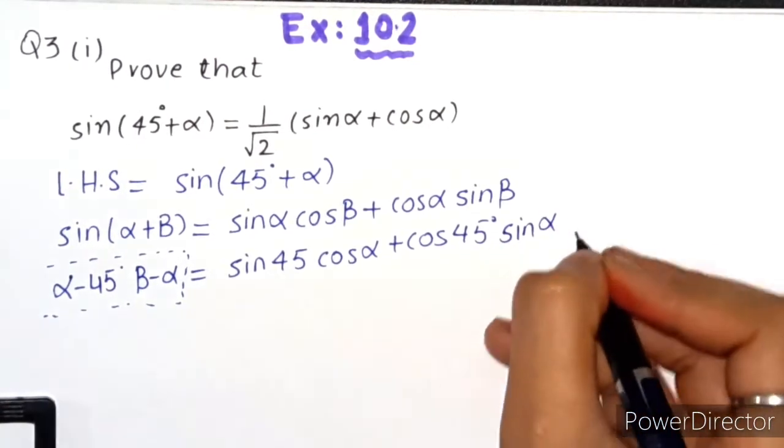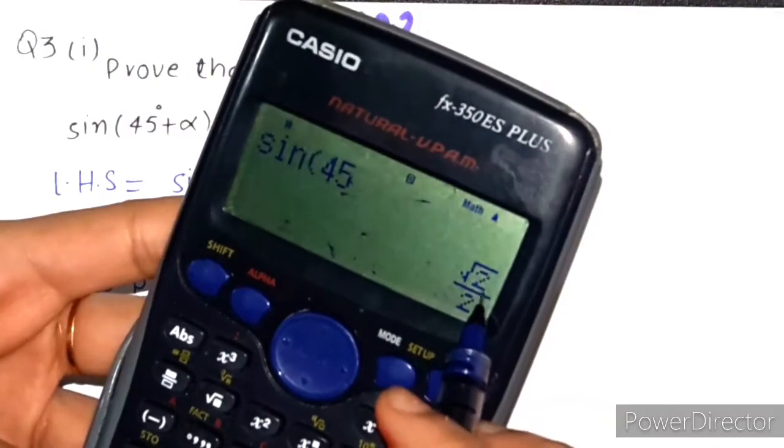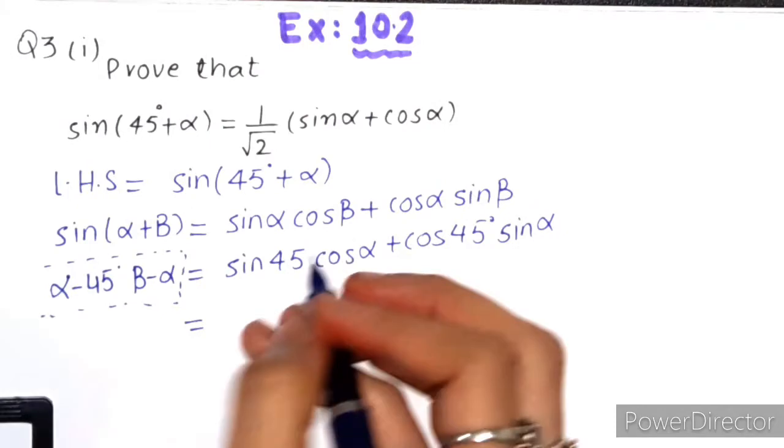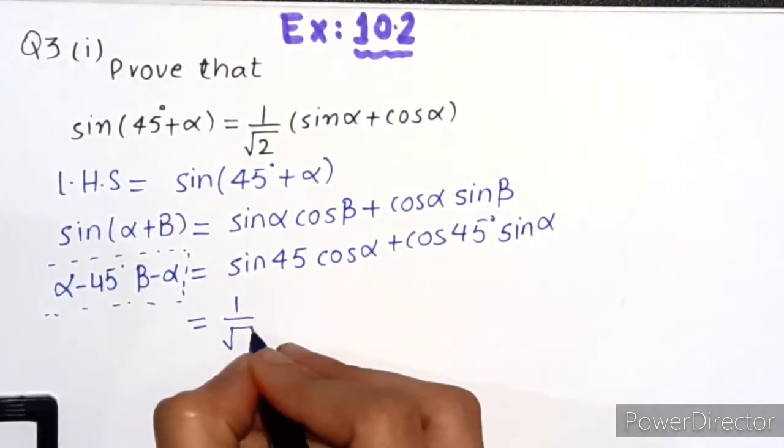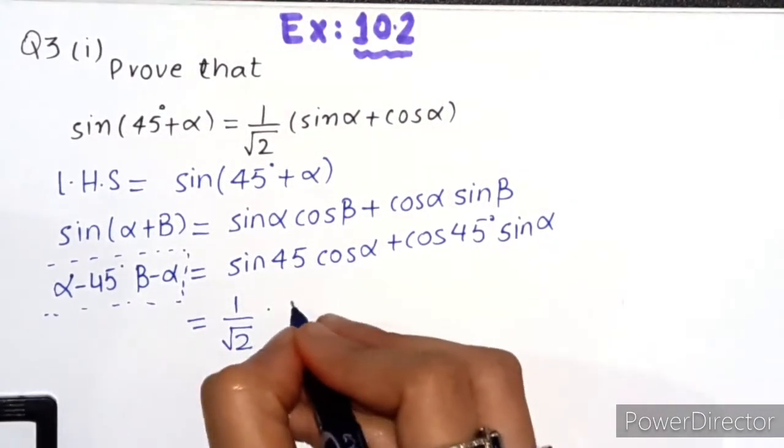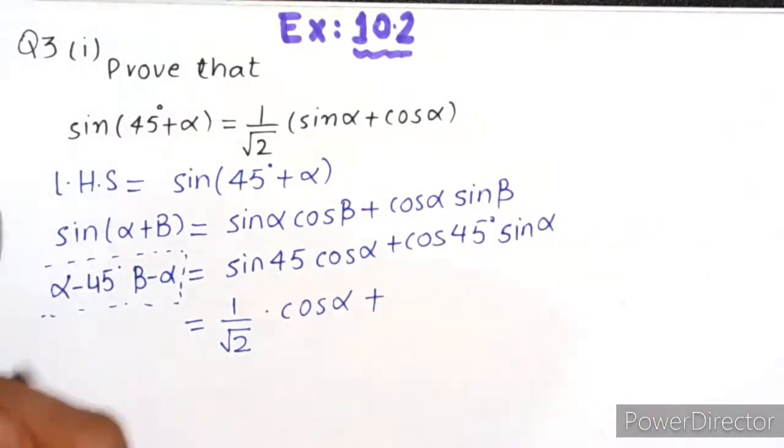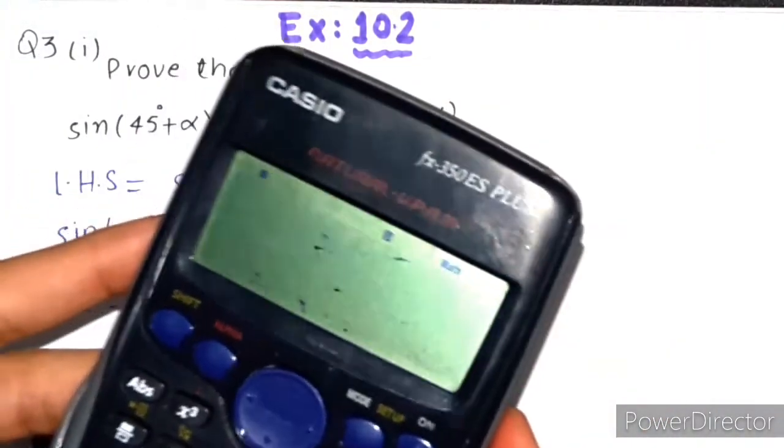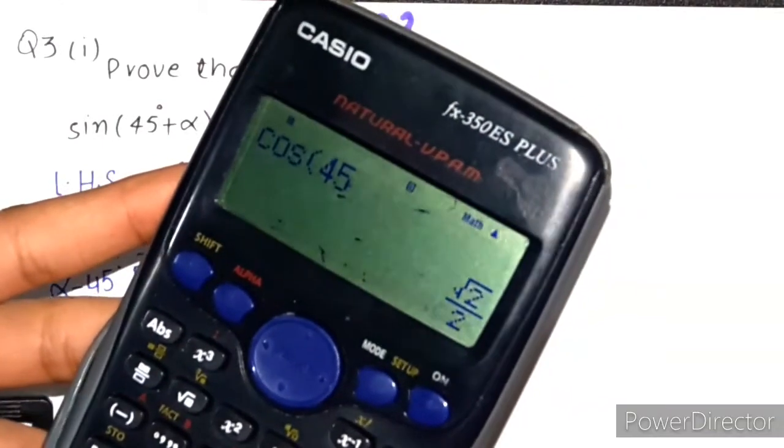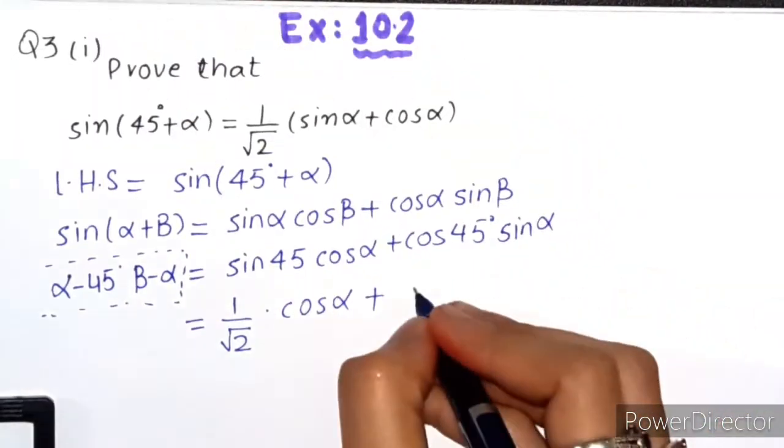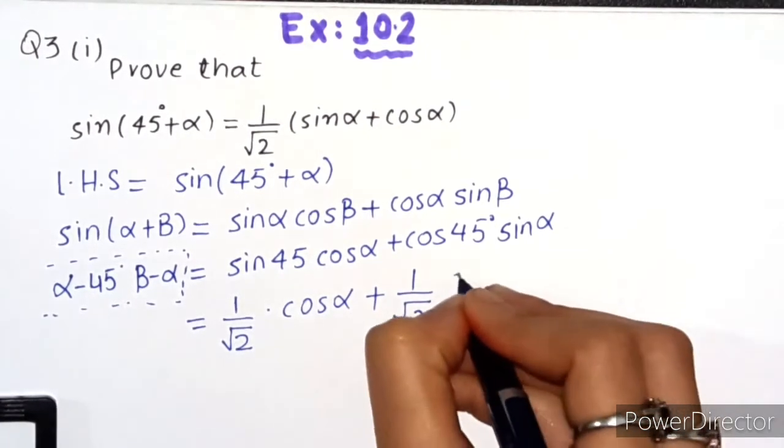Now we'll solve this with calculator. Sin 45° is root 2 divided by 2, which we can also write as 1 over root 2, times cos α plus cos 45°, which is also 1 over root 2, times sin α.